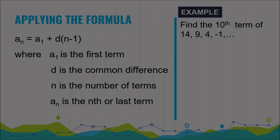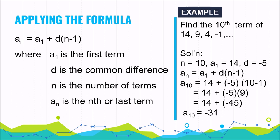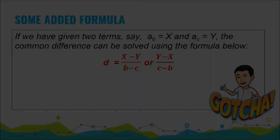Find the 10th term of the sequence 14, 9, 4, negative 1, and so on. Pause the video and check your answer later. The answer is negative 31 — did you get it right? Well done.